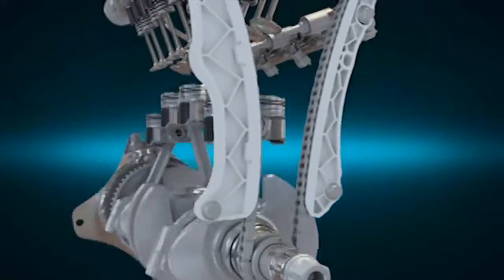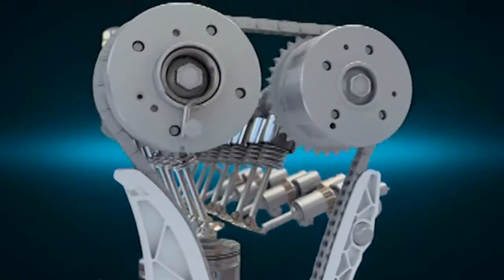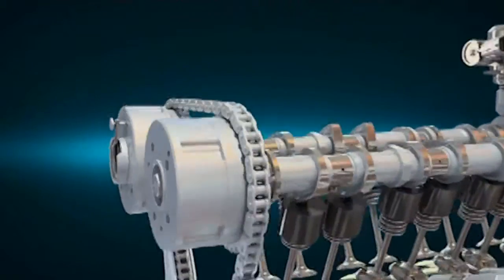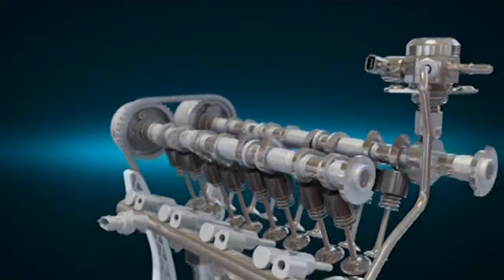A roller type timing chain improves performance in all conditions and the sophisticated dual CVVT system operates on both the intake and exhaust camshafts.